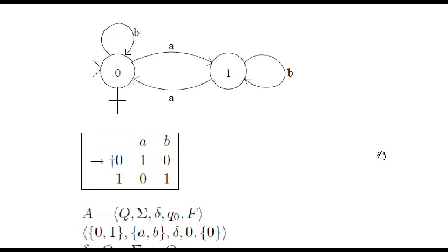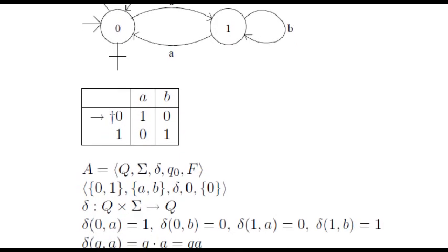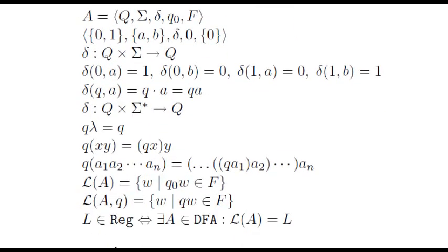We can also represent a deterministic finite automaton as a tuple containing the set of states, the input alphabet, the transition function, the initial state, and the set of accepted states. Here is the tuple that corresponds to our example.